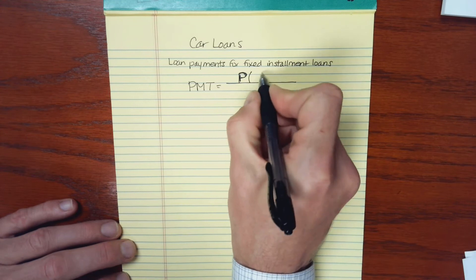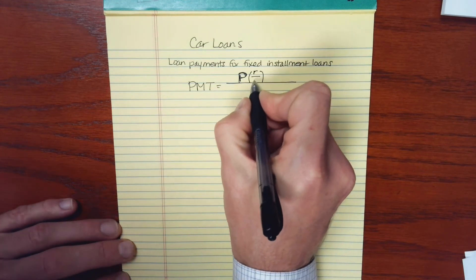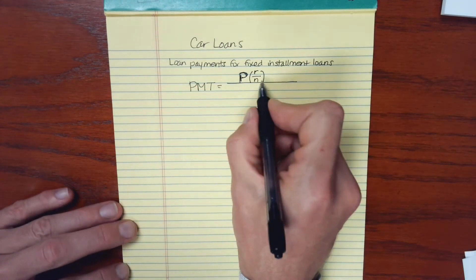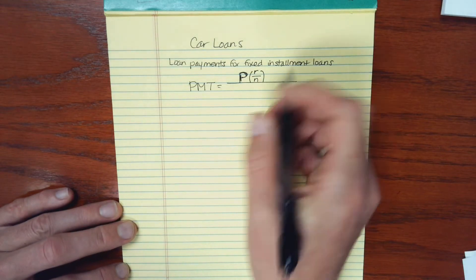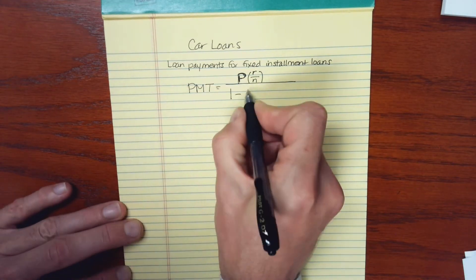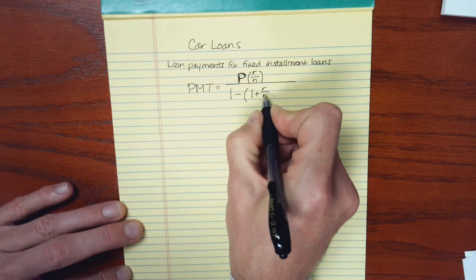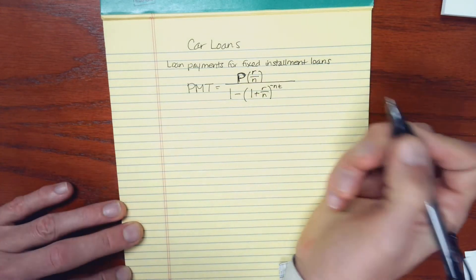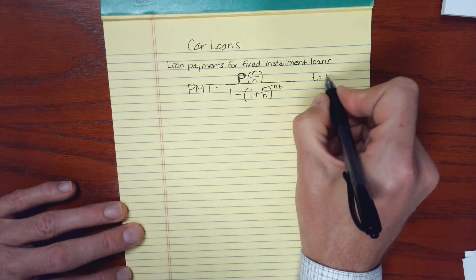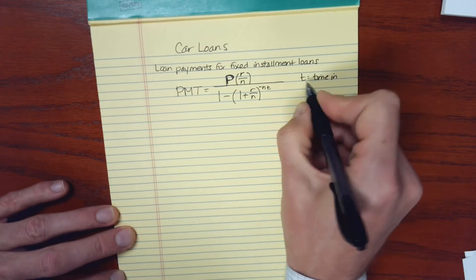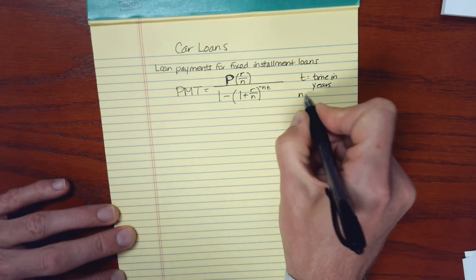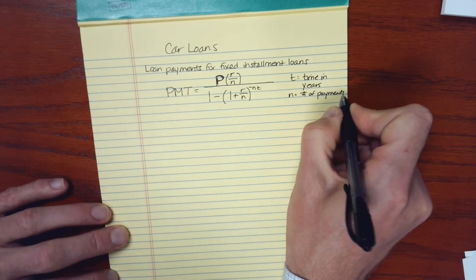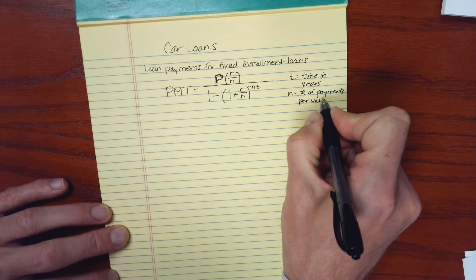So to calculate your monthly or periodic payment, you'll take your principal and multiply that by the quotient of the interest rate and the number of payments that you're making for each year. And in the denominator here, we have 1 minus and then 1 plus. Again, we see this R over N. And then there's an exponent for this amount that's in parentheses. It's negative N T. So T is the time, usually in years for the loan.